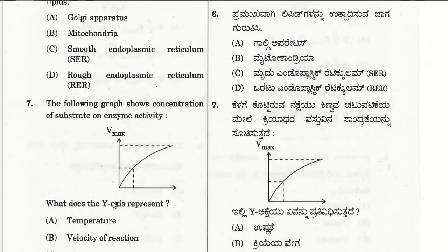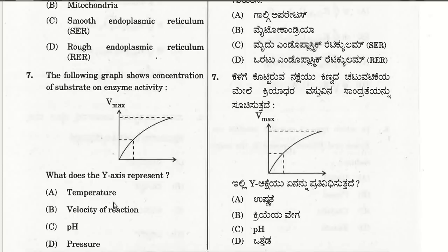The seventh question: the following graph shows concentration of substrate on enzyme activity — you have to find out what the Y-axis represents. The Y-axis represents Vmax, that is the velocity of the reaction. So the Y-axis on the graph represents velocity of the reaction.